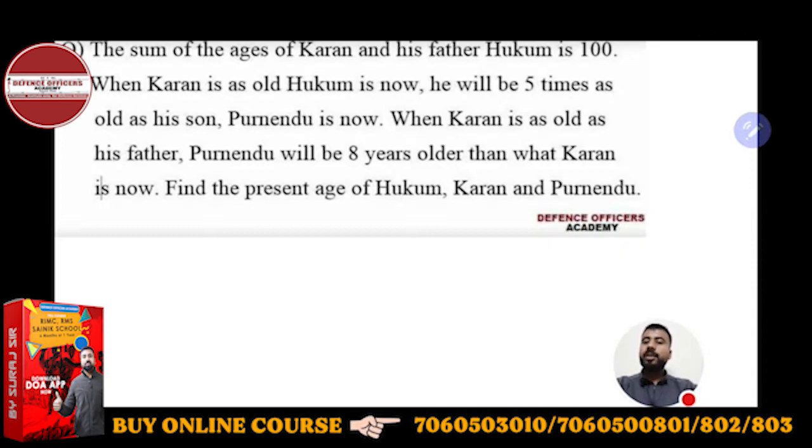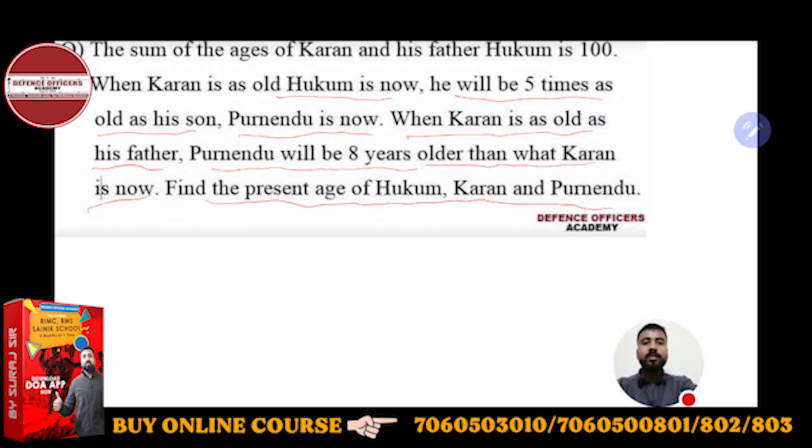Let's get started. The sum of ages of Karan and his father Hukum is 100. When Karan is as old as Hukum is now, he will be five times as old as his son Purnindu is now. When Karan is as old as his father, Purnindu will be eight years older than what Karan is now. Find the present age of Hukum, Karan and Purnindu.